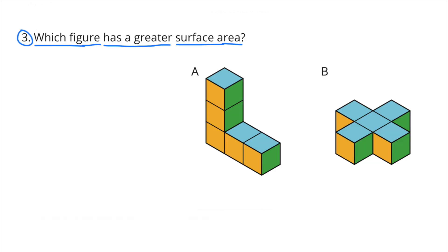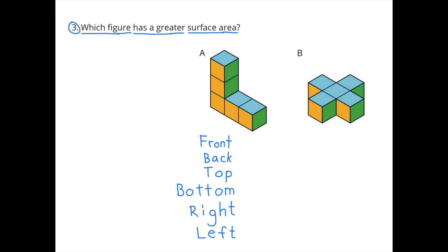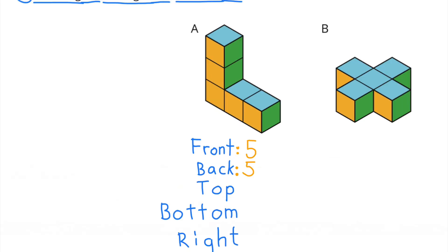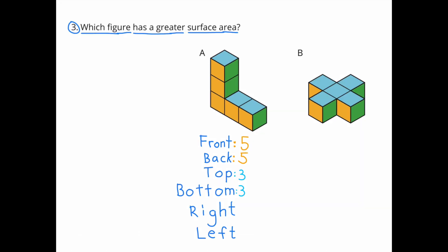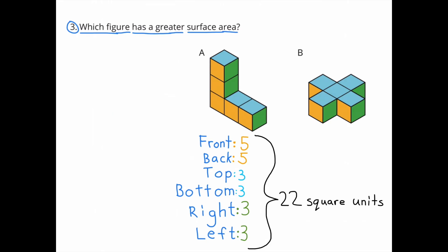Number 3. Which figure has a greater surface area? Figure A has a front, a back, a top, a bottom, a right, and a left. The front and the back each have a surface area of 5 square units. The top and the bottom each have a surface area of 3 square units. And the right and the left sides each have a surface area of 3 square units. All combined, Figure A has a total surface area of 22 square units.